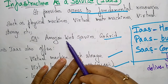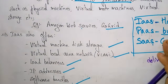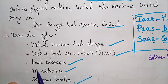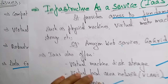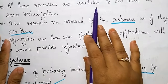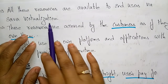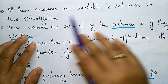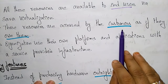IaaS provides access to fundamental resources such as physical machines, virtual machines, and virtual storage. Examples of IaaS include Amazon Web Services and GoGrid. It also offers services like virtual machines, disk storage, virtual local area networks, load balancers, IP addresses, and software bundles. All these resources are available to end users via server virtualization.